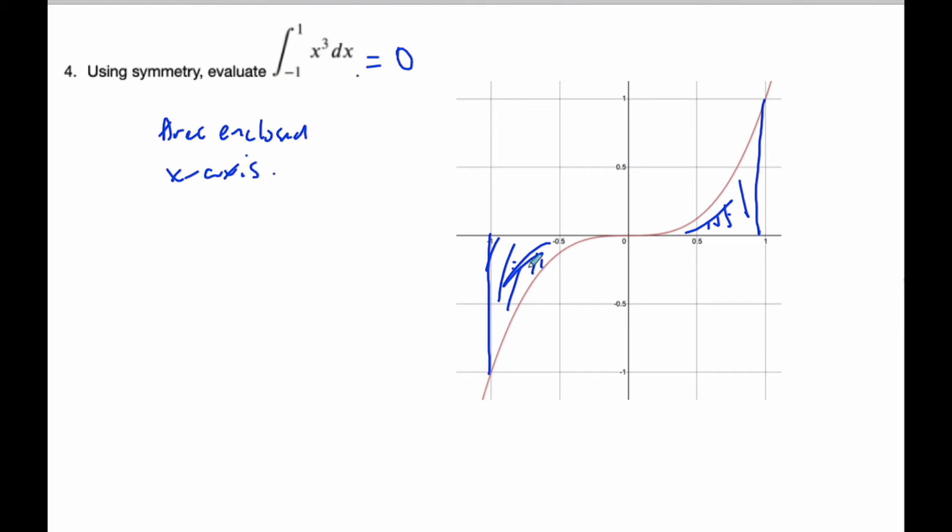What I could have also done to make life easier is, if I want to find the area, I could have done 2 times the integral from 0 to 1 of x cubed dx. And then I would just find this area and multiply it times 2.